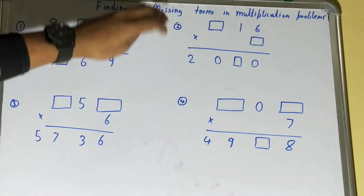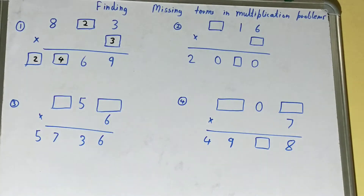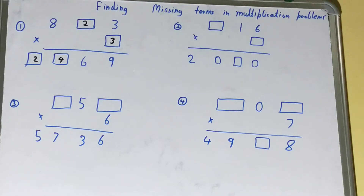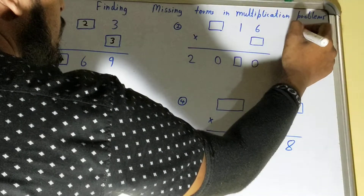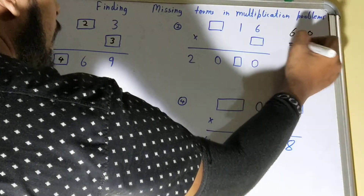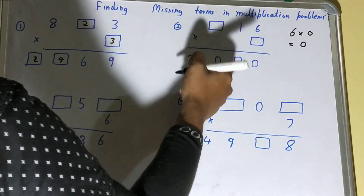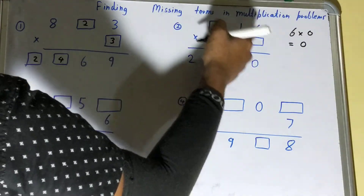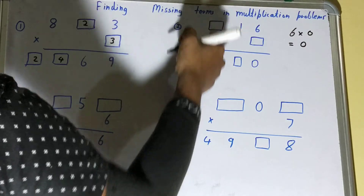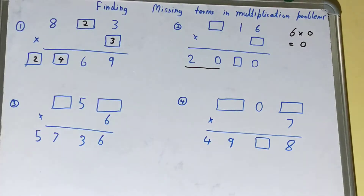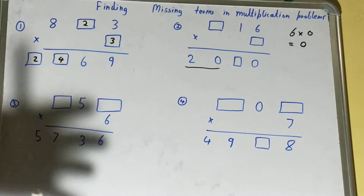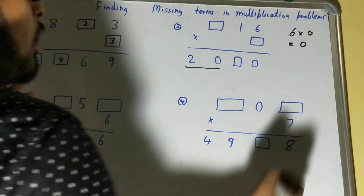The problems will get trickier as we go deeper. For the second one, we need to multiply six with something to get zero. You might think six times zero gives zero, but then every digit would be zero — yet here we have 20, not zero. So we cannot use zero; we need to be smarter.